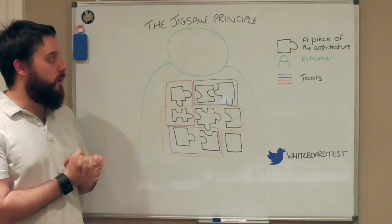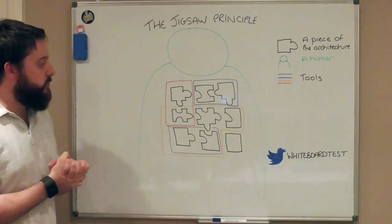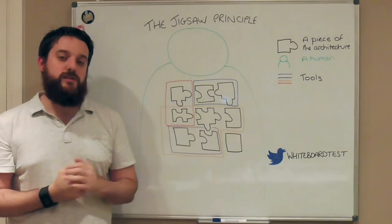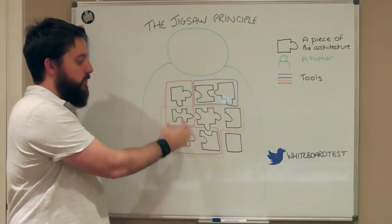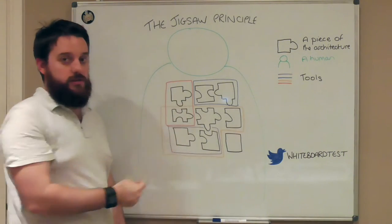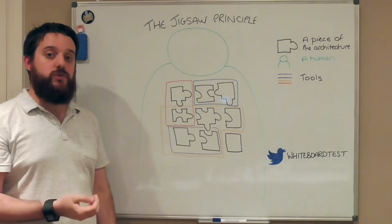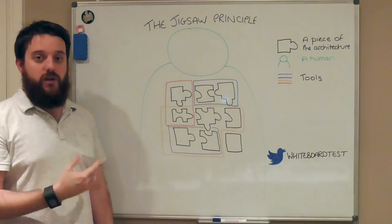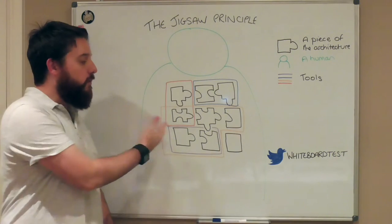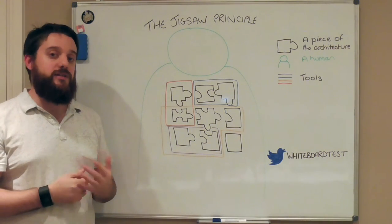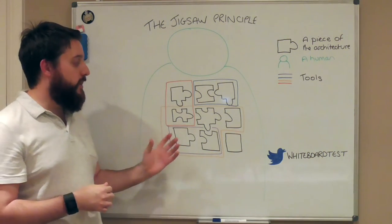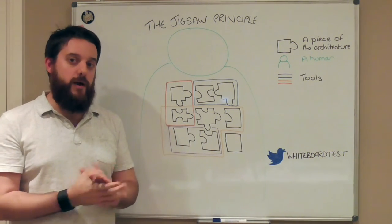I'm going to try and explain what I've drawn, and we're going to start with these jigsaw pieces. For me, the jigsaw pieces resemble my architecture — all these pieces together is my automation architecture. However, these individual pieces are libraries that I may have sourced from the internet, such as Chakram, JUnit, RestAssured, or WebDriver, or libraries and classes that I've built myself to support the automation that I'm trying to do. Either way, I have one or more of these, and they are my architecture.